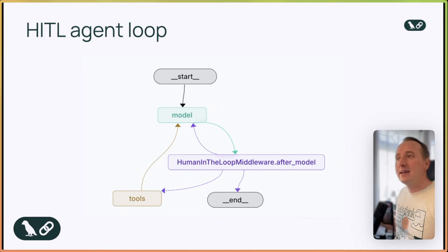It's a middleware layer that intercepts a tool call and adds a review step inside an agent's reasoning loop. Here's what happens. When the agent proposes a tool call that matches a rule you define, say the tool is called send-email, the middleware raises an interrupt. The agent pauses its execution, saves its current state, and waits for the human input.